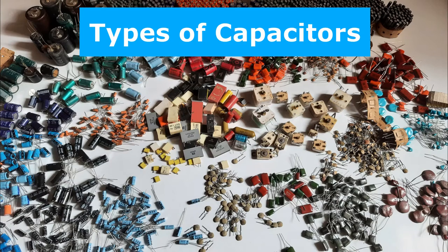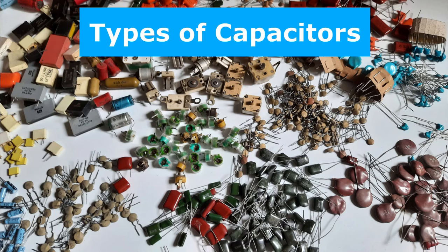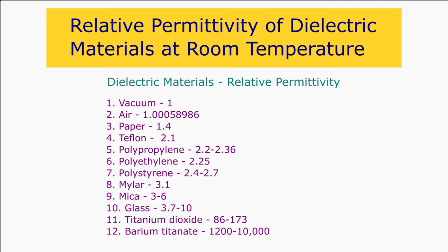There are different types of capacitors based on the dielectric material they contain and their relative permittivity, such as paper capacitor with a permittivity of 1.4, polystyrene with a permittivity of 2.4 to 2.7, mica capacitor with a permittivity of 3 to 6, glass with a permittivity of 3.7 to 10, and titanium dioxide with a permittivity of 86 to 173.